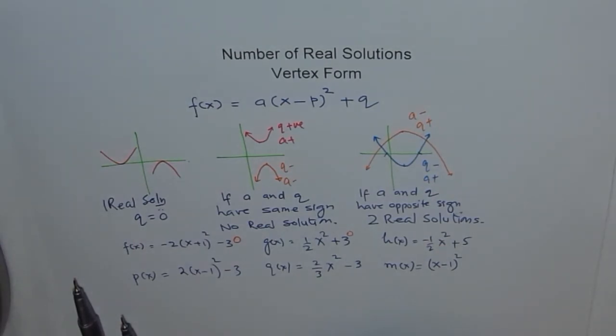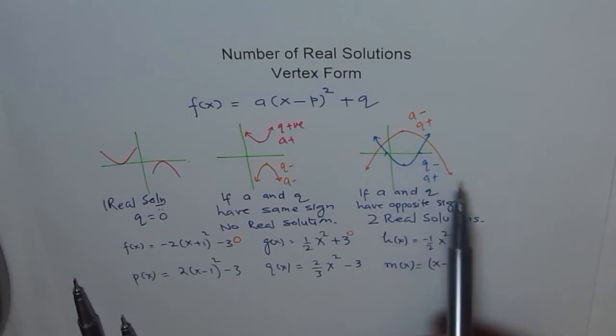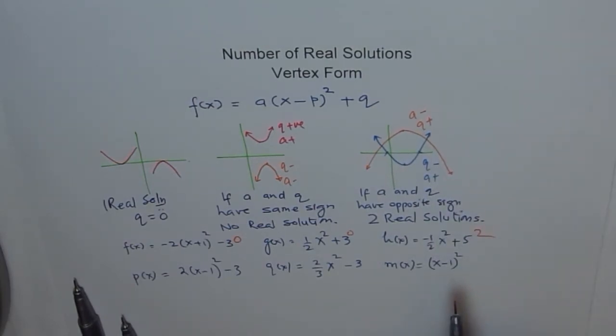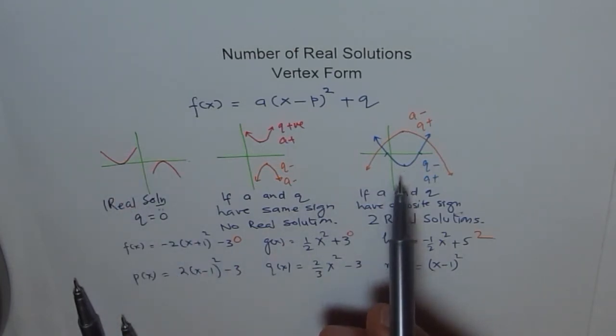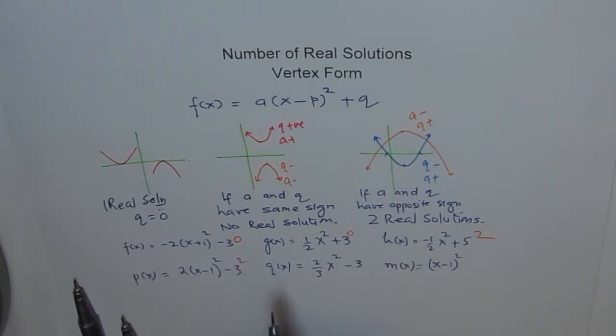h(x) equals to minus - A is negative and q is positive. So you are somewhere here and opens downwards. How many solutions? Two solutions. Here, A is positive. That means you are going up and q is negative. You are down. Somewhere here going up. So it is a scenario like this. And how many solutions do you expect? Two.